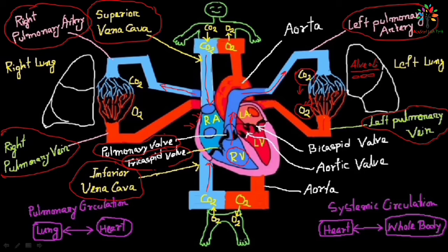There are two pulmonary veins from each lung connected into the left atrium — that means two pulmonary veins from each lung carry oxygenated blood into the left atrium. Once the oxygenated blood fills the left atrium, the left atrium contracts. One important point: the pulmonary artery is the only artery which carries deoxygenated blood — all other arteries carry oxygenated blood. And the pulmonary vein is the only vein which carries oxygenated blood — all other veins carry deoxygenated blood. Please remember these points.